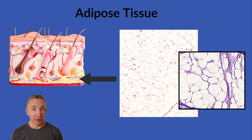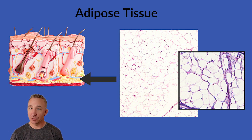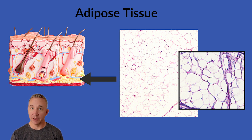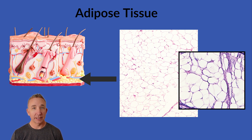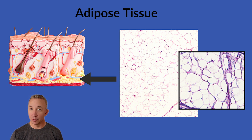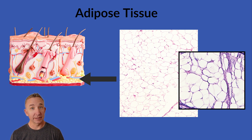Histology of adipose tissue. We're looking at one of our types of connective tissue. There are four types of tissue in the body: epithelial, connective, muscle, and nervous. There are three types of connective tissue: connective tissue proper, connective tissue fluid, and supporting. Two types of connective tissue proper: loose and dense. This is one of our loose connective tissues.